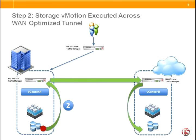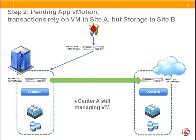The first step is to execute the storage vMotion. vCenter has a connection to both the host in site A as well as site B through this iSessions tunnel. The storage vMotion migrates the storage of the virtual machine across to the data store in site B. At this point we have storage of the virtual machine in site B, the virtual machine is still in site A, and as users are accessing the application, any storage traverses the iSessions tunnel.